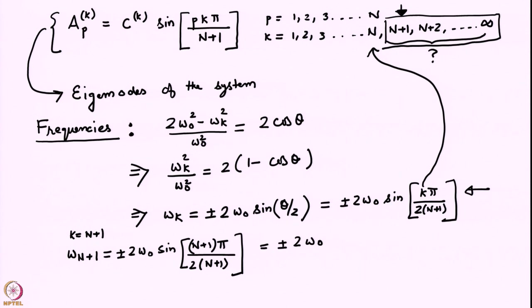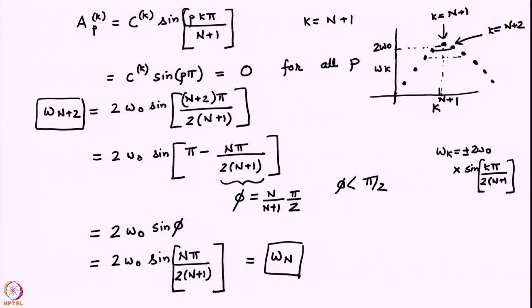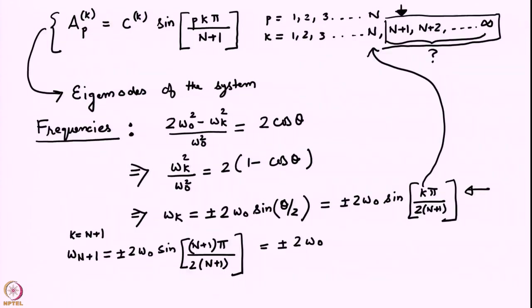We had also found a single formula for the eigenmodes of the system, and also a formula for the eigenfrequencies. We had also shown that there are certain extra values which appear, and we argued that these values do not contain anything new. For the (N+1)th case, it gives you a zero eigenvector, and from N+2 all the way to infinity, it is actually a repeated eigenvalue and a repeated eigenvector.